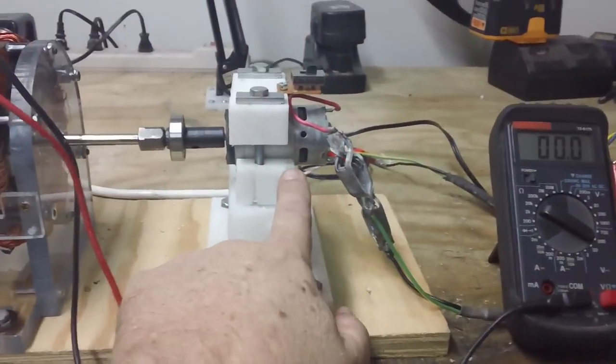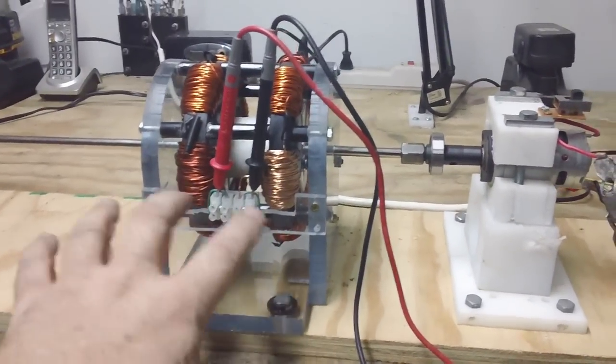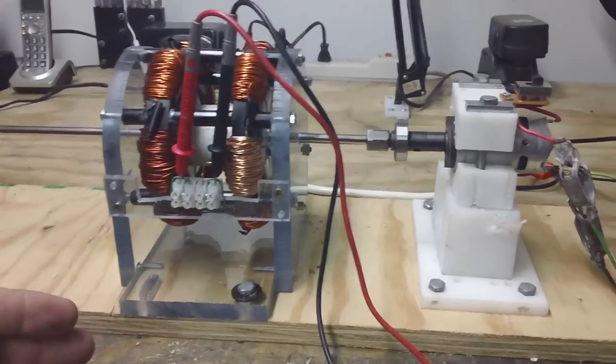This is a small router motor. This generator is wound with number 18 wire. There's 12 coils. They are continuous one phase, the way it's wound.